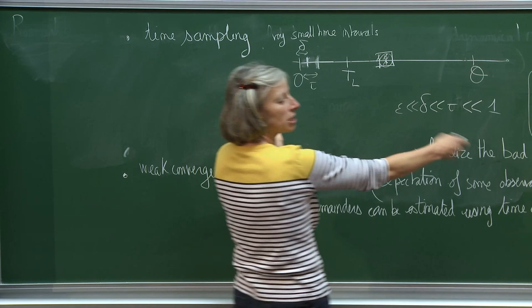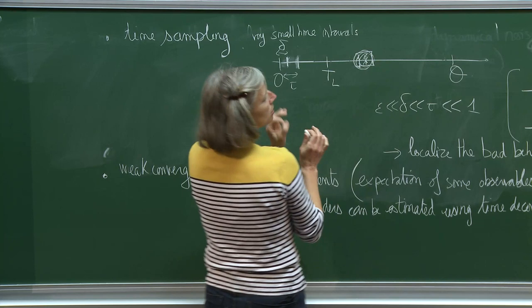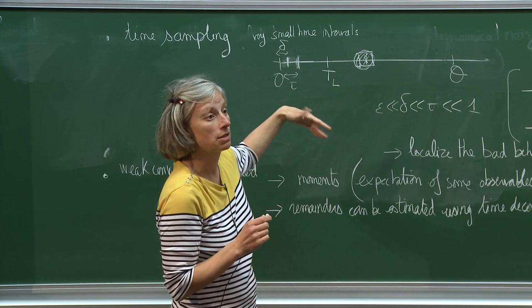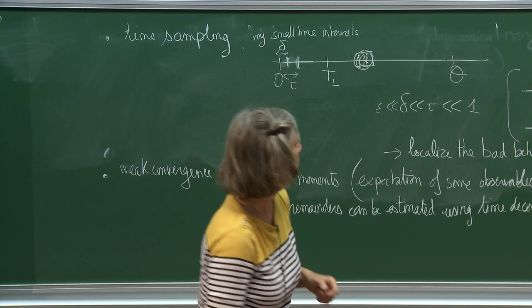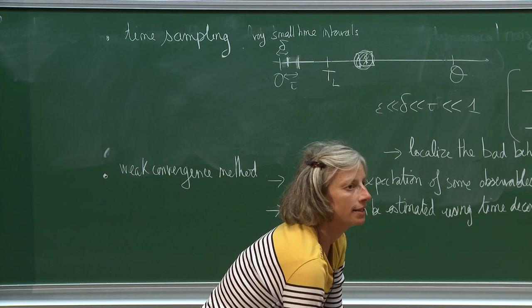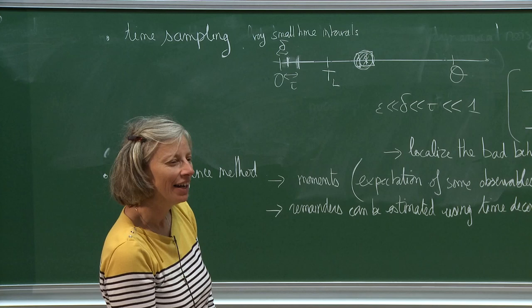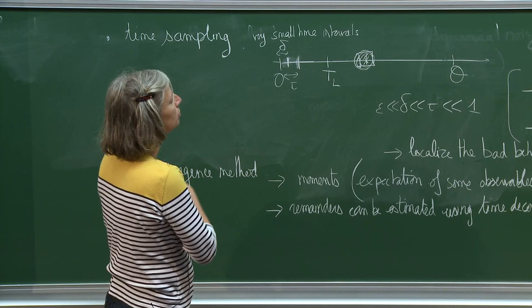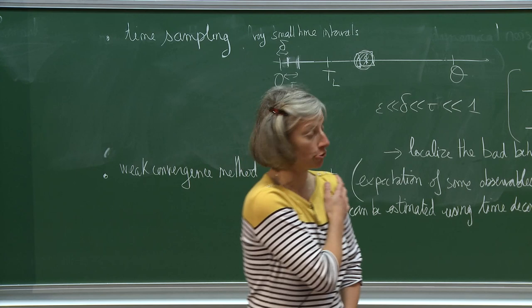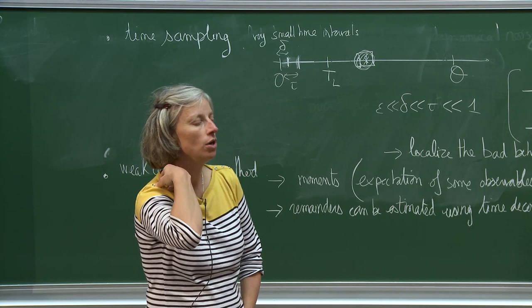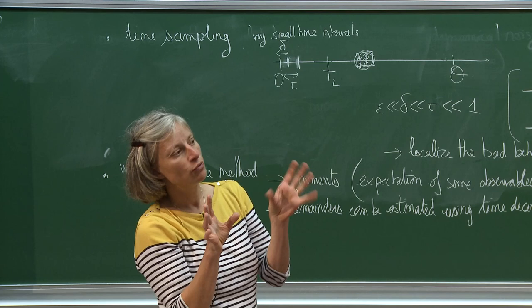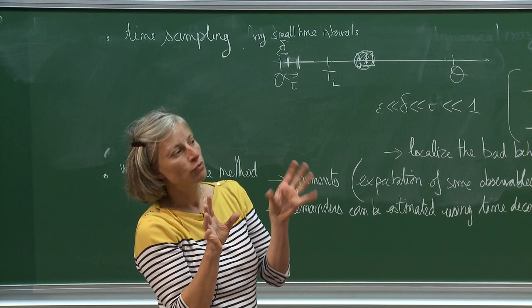Concretely: you take the fluctuation field at different times tested against observables, and you say that the contribution of the pathological region is essentially zero — so its contribution to the expectation is essentially zero. The remainders are then estimated using time decoupling. This is the key new ingredient: instead of an exact representation of the correlation function, you compute expectations of moments at different times and discard events using the invariant measure.